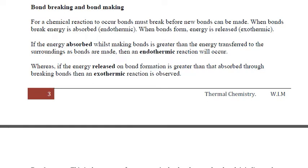For a chemical reaction to occur, bonds must break before new bonds can be made. When bonds break, energy is absorbed. That means the process of bond breaking is endothermic. It requires energy to be absorbed. And when a bond forms, energy is released. That means the process of bond formation is exothermic.